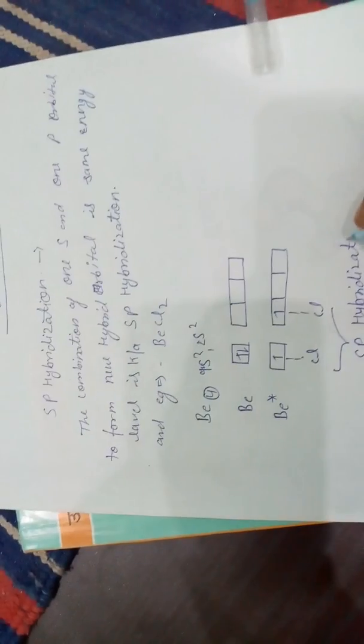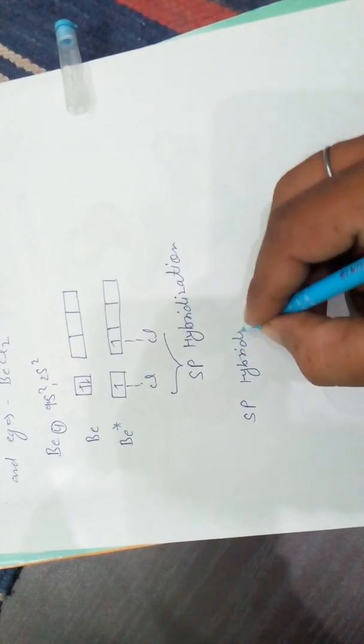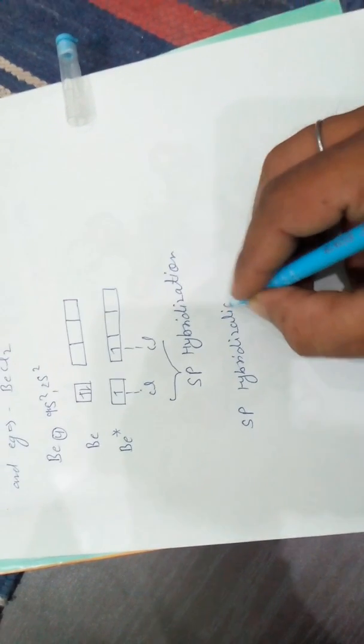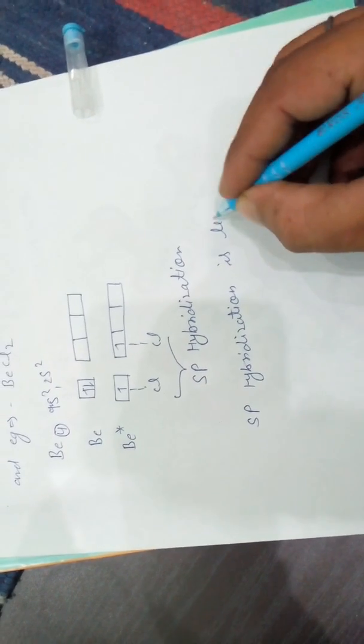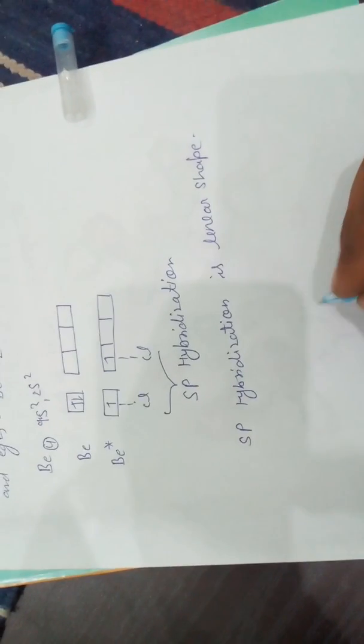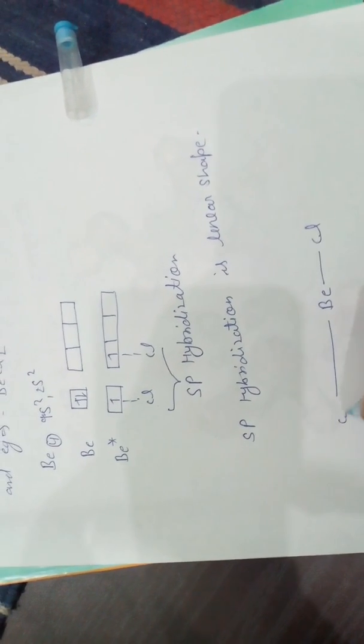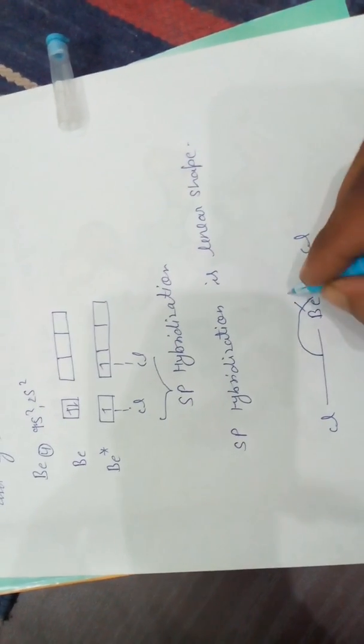SP hybridization gives a linear shape. With beryllium as the central atom and chlorine on each side, just like this, the bond angle is 180 degrees.